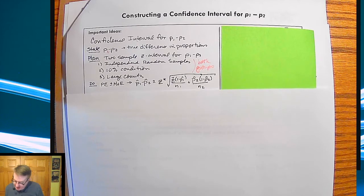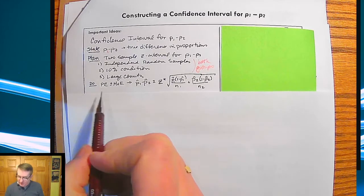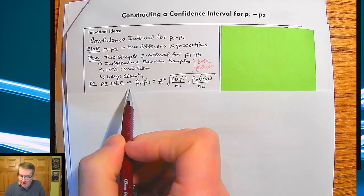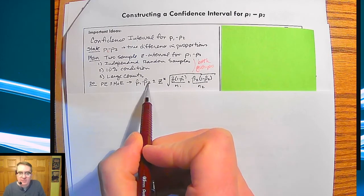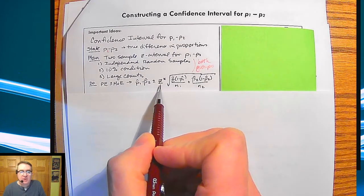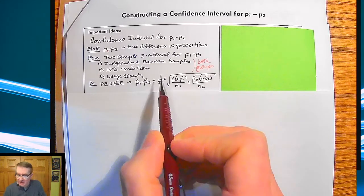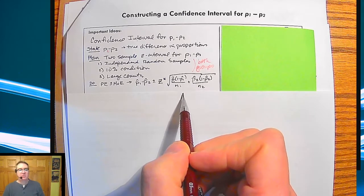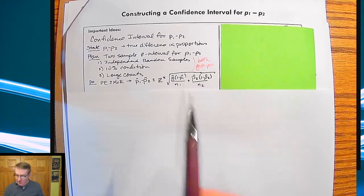In terms of the actual doing, remember, general formula is a point estimate plus or minus margin of error. So in our case here, you'd have P1 hat minus P2 hat plus or minus z times the standard deviation of the combined or the difference of proportions. And we went through that last chapter.